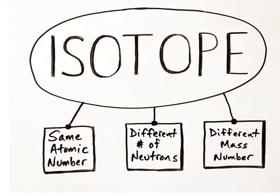What are isotopes? Isotopes are atoms of the same element having the same atomic number but with a different number of neutrons, and therefore a different mass number. Even though atoms of any given element will always have the same number of protons, they can have different numbers of neutrons.